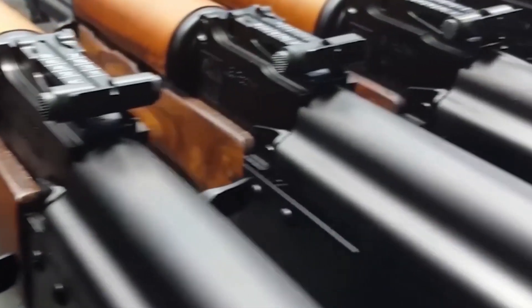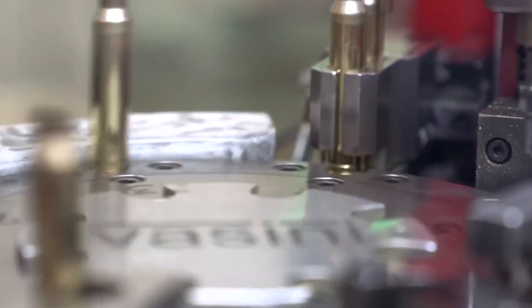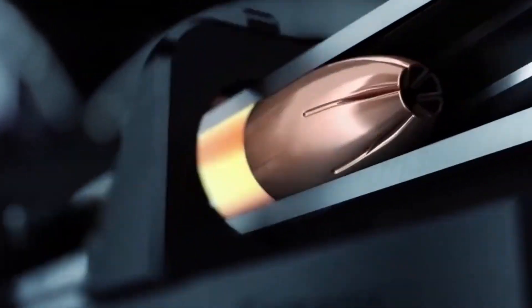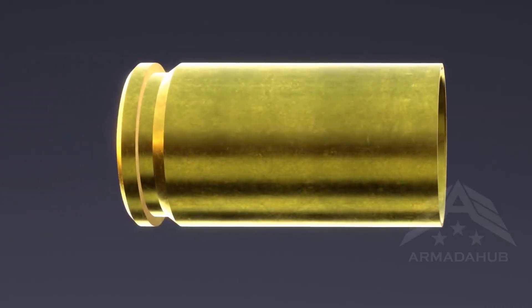These feature a lead core completely encased in copper, which prevents barrel fouling and complies with international conventions on warfare. Some specialized bullets use solid copper or brass construction, particularly for hunting applications where maximum weight retention is desired.